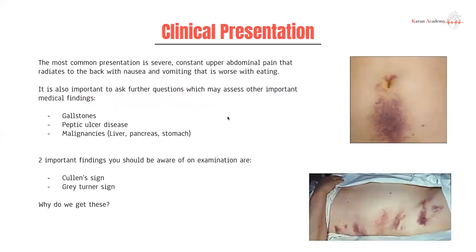How is pancreatitis going to present? The most common presentation is severe, constant upper or epigastric pain radiating to the back — that's quite important for your exams. It's also relevant to ask further questions: since gallstones are an important cause, ask whether they have a history of gallstones, whether the gallbladder has been removed, whether they're jaundiced, right upper quadrant pain, cholecystitis, cholangitis — all those things are relevant.